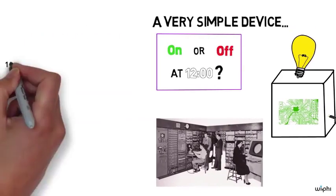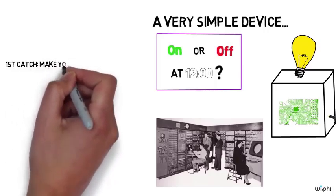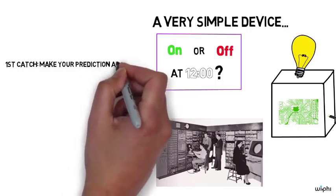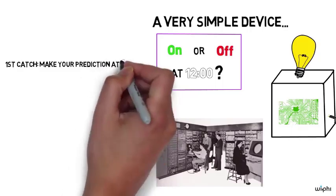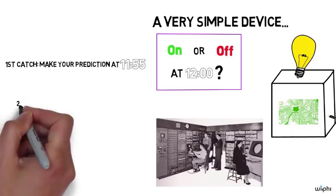Small catch though. In fact, there are two small catches. First catch is this. You have to make your prediction before 12 o'clock. You have to make it at exactly five minutes to 12.